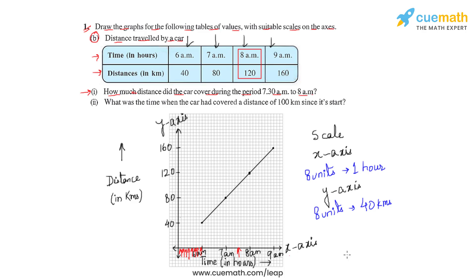Four units from 7 am gives this point on the x-axis, and to measure the distance we intersect this line at that point. This point corresponds to a point on the y-axis which is exactly in the middle of 80 and 120. Hence, at 7:30 am the car will have covered 100 kilometres. So between 7:30 am and 8 am the car has covered 20 kilometres — the difference of 120 and 100.